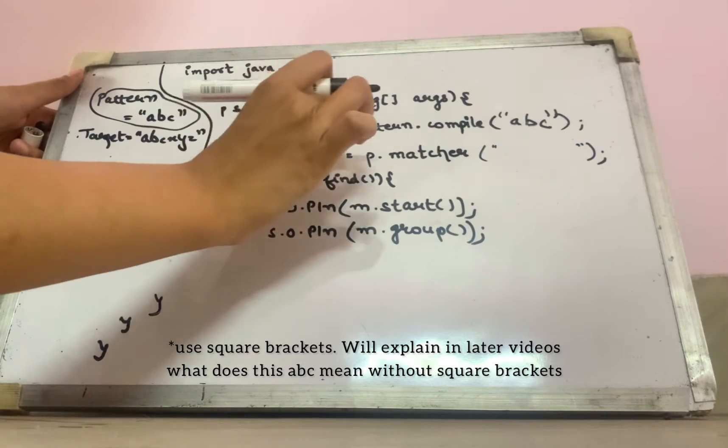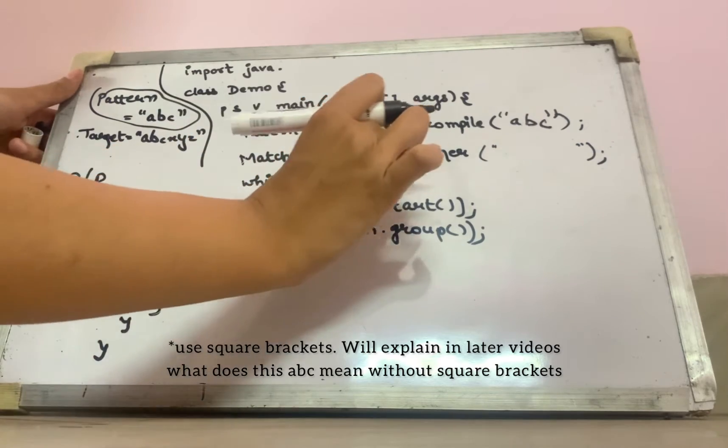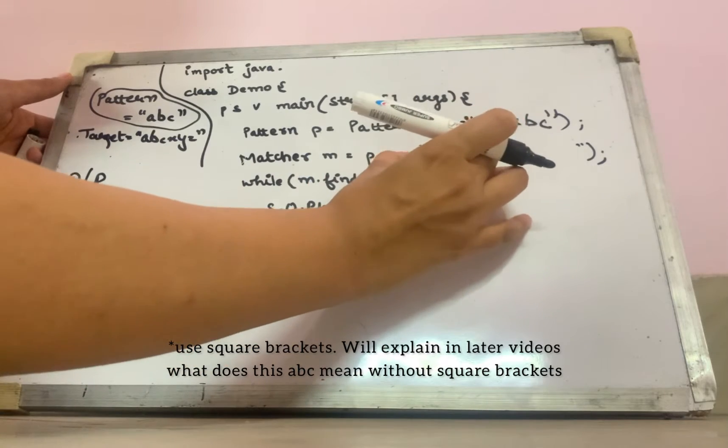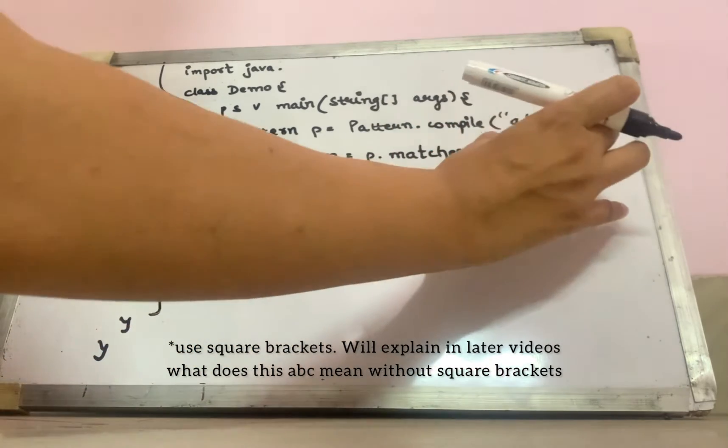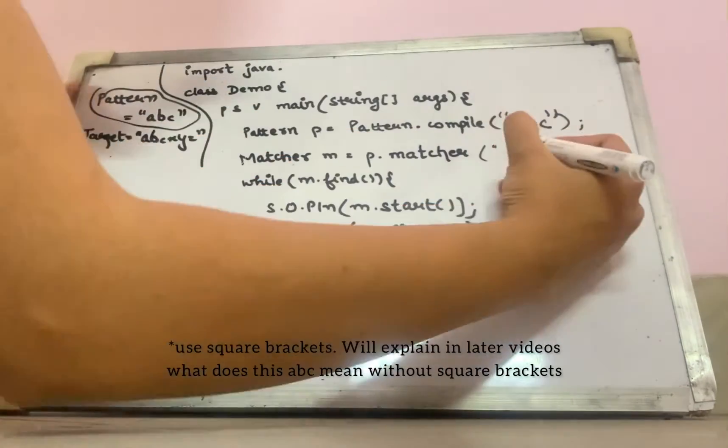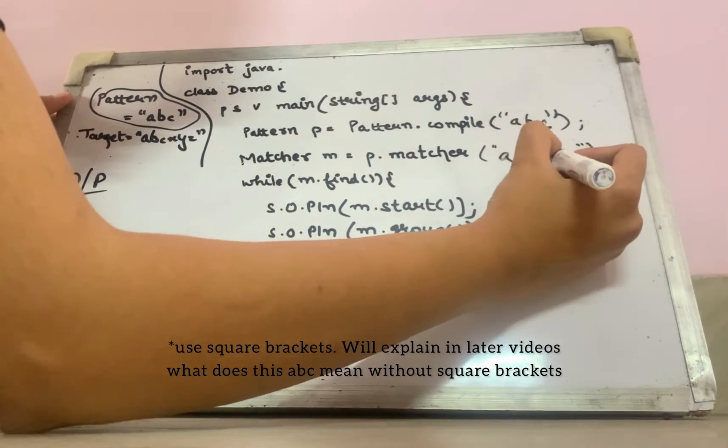Once I get the pattern class object, its matcher method. This matcher is going to find the match in the target string. So what is my target string? A b c x y z.